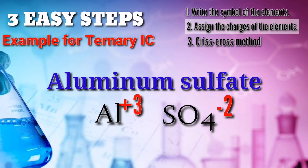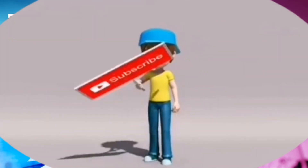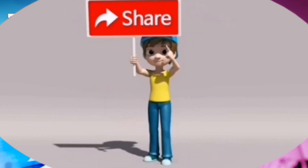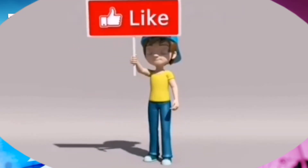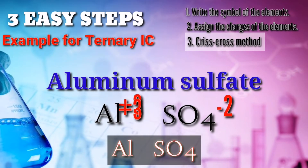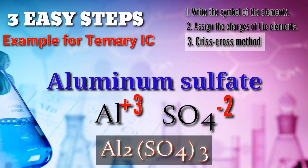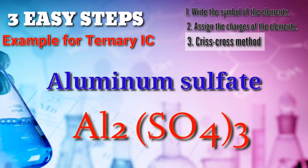After assigning the charges of the elements, we can now proceed to step 3, the criss-cross method. Let's perform the criss-cross method. SO4 will have the positive 3 and Al will have the negative 2. Don't forget to remove the positive and negative signs because they are now our subscripts. The chemical formula for aluminum sulfate is Al2(SO4)3.